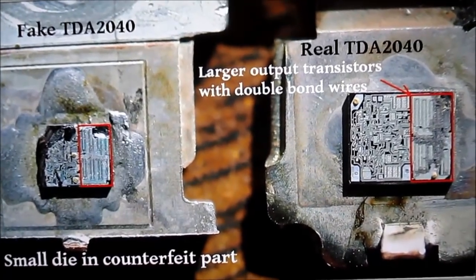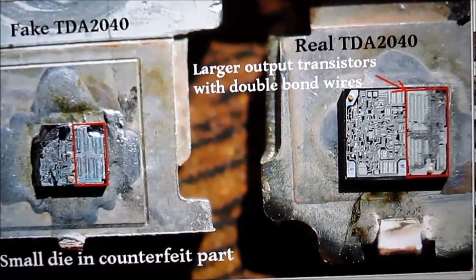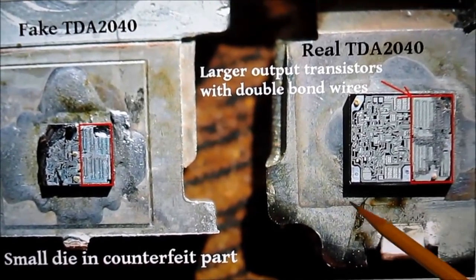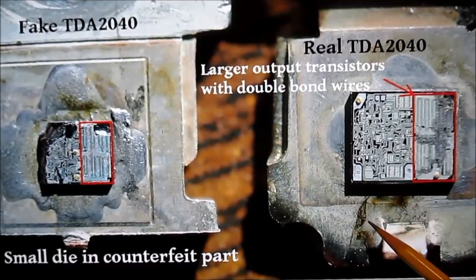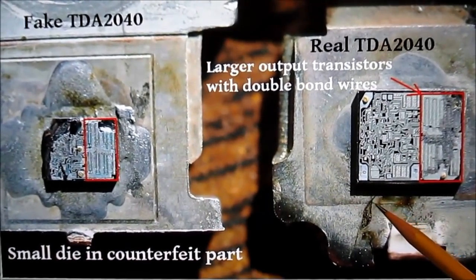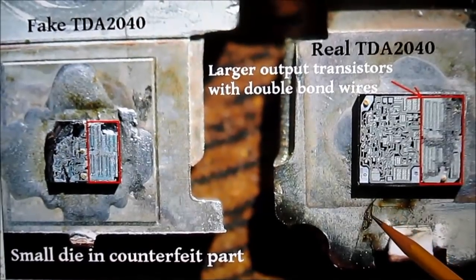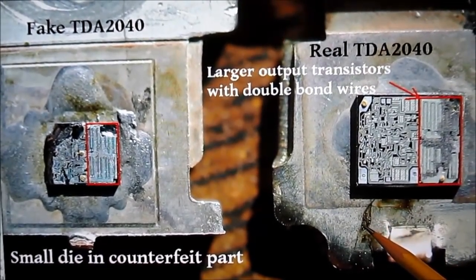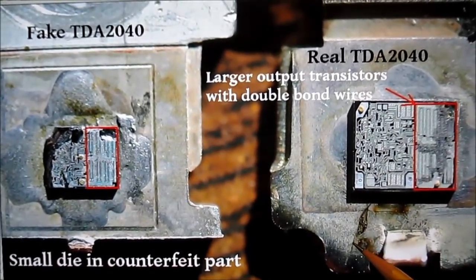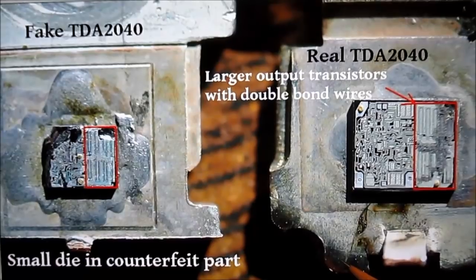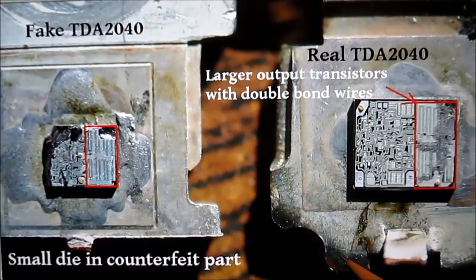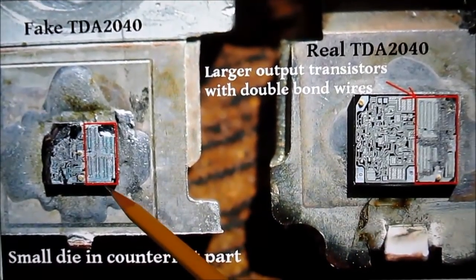Here is a picture of some ICs with the epoxy removed. After this, I will put in a still photo so you can hit pause and look at it closely. These are TDA 2040 ICs. One is authentic and one is counterfeit. Now I've heard people say that they use reject dies, but I've never found that to be the case.